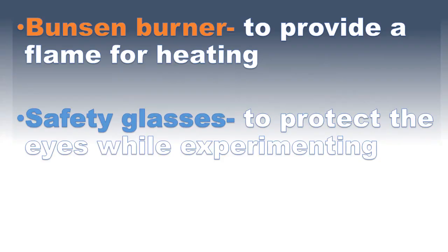Here we have the Bunsen burner and the safety glasses. The Bunsen burner provides a flame for heating, whether luminous or hot — it produces both yellow and blue flames, providing either of the two for heating. The Safety Glasses are used in the science lab for protection, to protect our eyes while experimenting from any form of chemicals getting into the eyes, which can lead to severe illnesses.